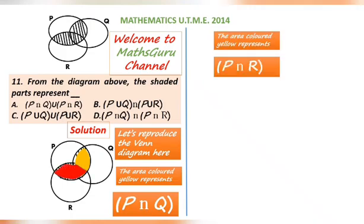The area colored red represents P intercept R. That is what is in P that is also in R.